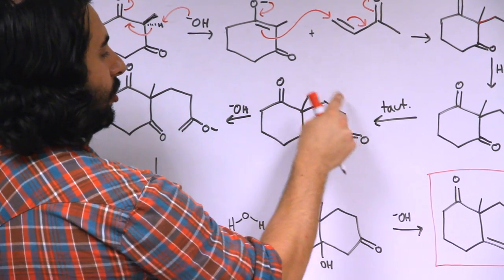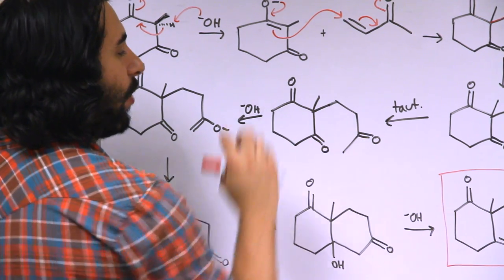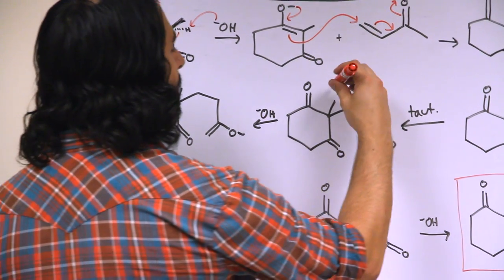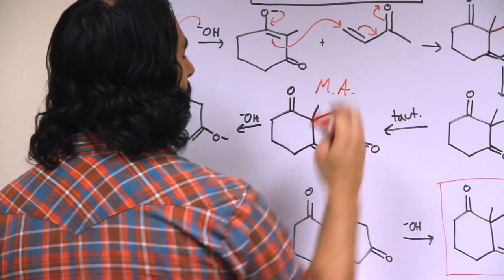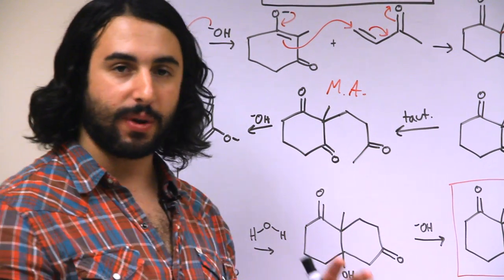So this is going to be a better situation. So that's the tautomerization and there is our 1,4 Michael addition. If this was carbon 1,2,3,4, we've got that 1,4-dione. So this is our Michael addition product right there. That's step one. So we've done one part of it.